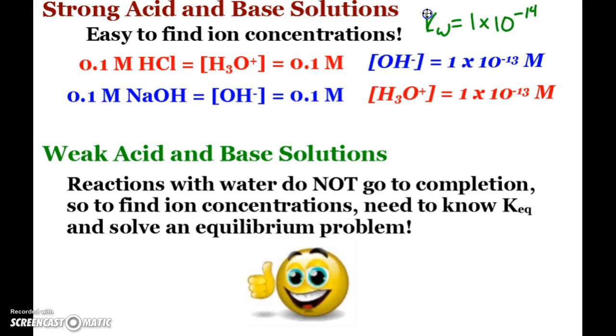Remembering that KW is 1 times 10 to the negative 14th and hydronium times hydroxide will always equal that, I can easily find the hydroxide for that hydrochloric acid solution. And vice versa, sodium hydroxide, hydroxide is 0.1 molar, hydronium 1 times 10 to the negative 13th. You just have to be careful like if we had calcium hydroxide, my hydroxide concentration would be 0.2 molar because of the fact that there are two hydroxides present.